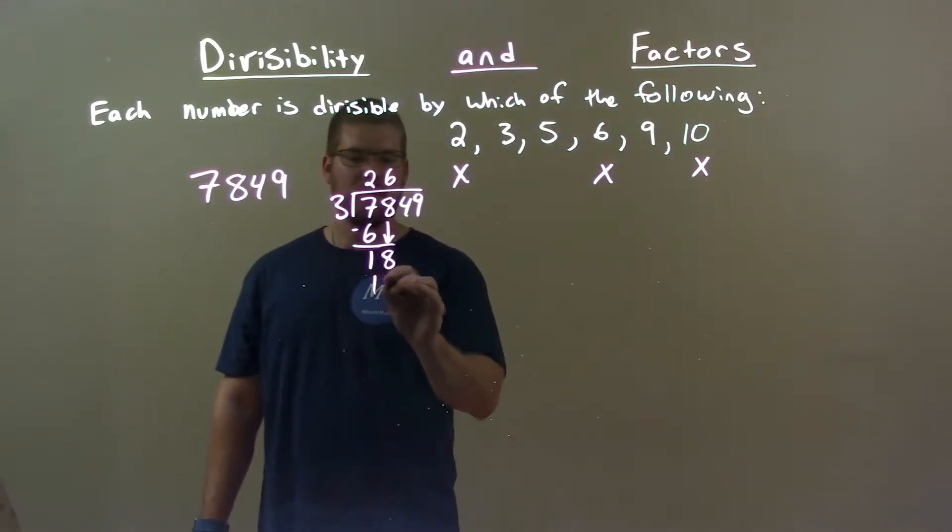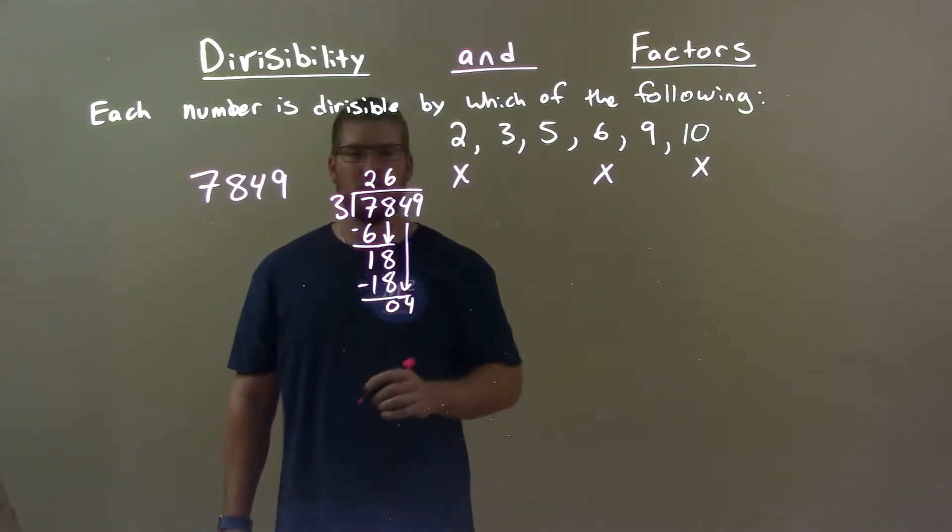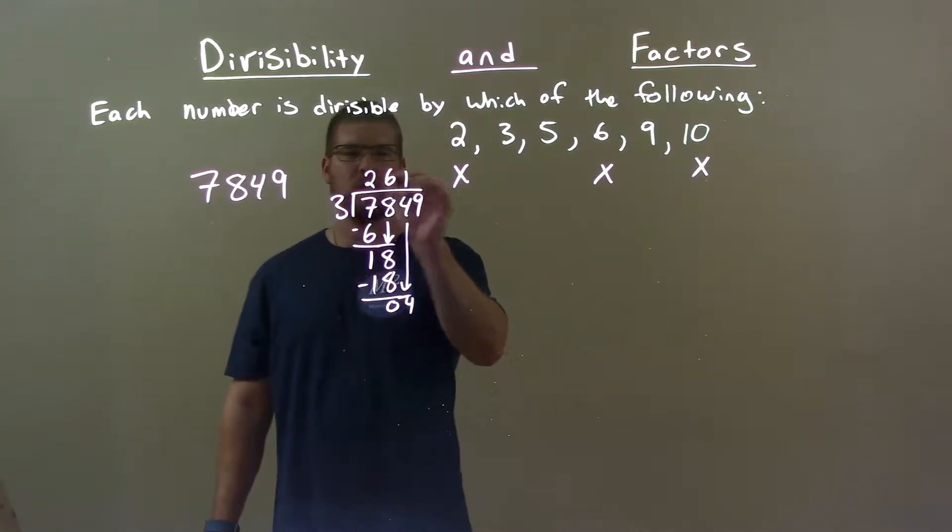6 times 3 is 18. Subtract it, get a 0. Bring down the 4. Does 3 go into 4? Well, 1 time. 1 times 3 is 3.